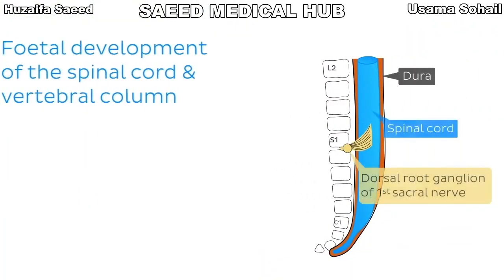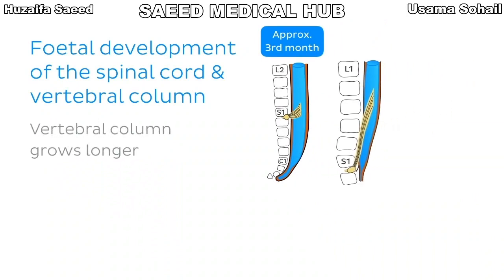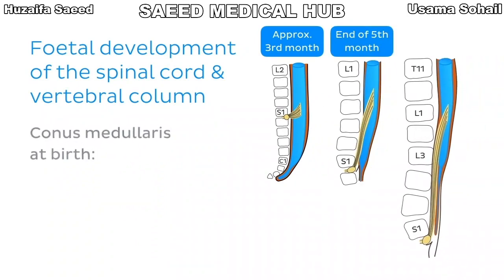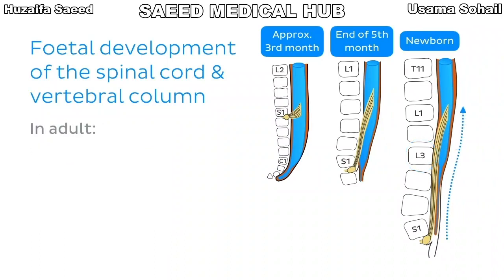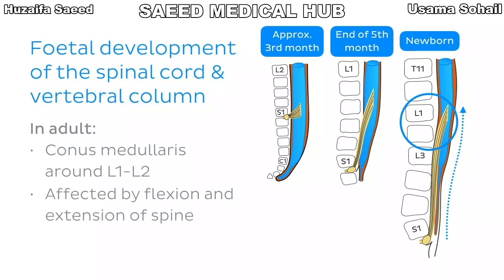So you might wonder why this happens. It's all due to changes during fetal development. Although the cord and the spine are the same size until the third month of fetal development, the vertebral column then grows longer than the spinal cord. The end of the spinal cord, the conus medullaris, at birth is around the level of L3. Eventually, as the individual continues growing, the vertebral column continues to grow longer than the spinal cord, so the conus medullaris settles at around the L1 to L2 vertebral level. Some individual variation exists and flexion and extension of the spine also affects the position of the spinal cord within the vertebral column.